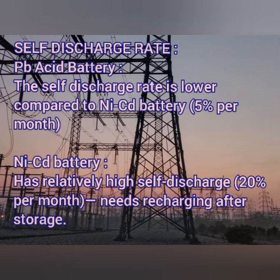Next is self-discharge rate. Lead acid batteries have a very low self-discharge rate of about 5 percent per month, which can be managed by trickle charging. When storing a lead acid battery, you need to fully charge it, remove the electrolytic solution, and keep it as a dry cell.